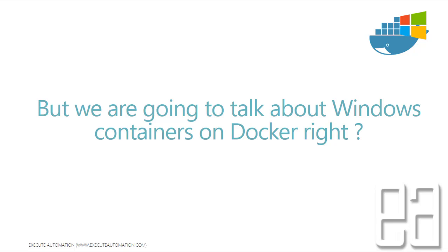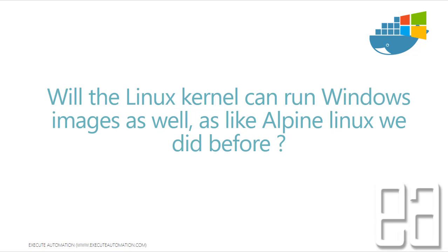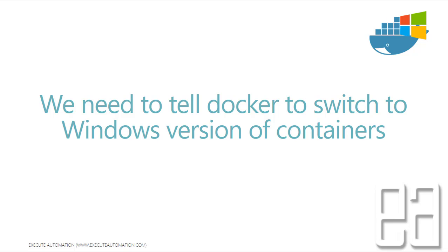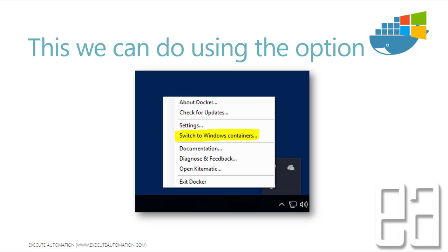Now we're going to talk about Windows containers in Docker. Can the Docker kernel run a Windows image the same way it ran Alpine Linux — which we pulled from hub.docker.com? The answer is no. We need to tell Docker explicitly to switch to the Windows version of containers. This option is not available in the general available Docker for Windows download — rather, the beta version has the 'Switch to Windows Containers' option.